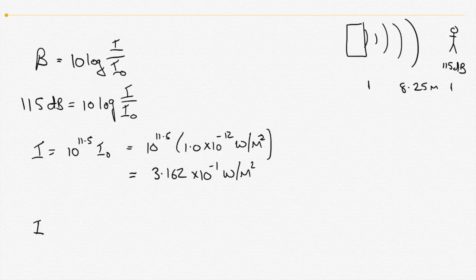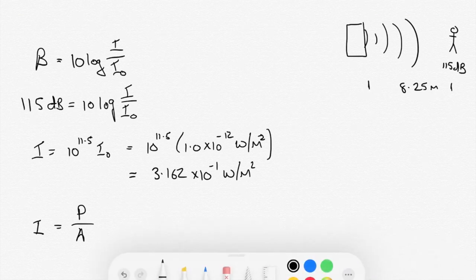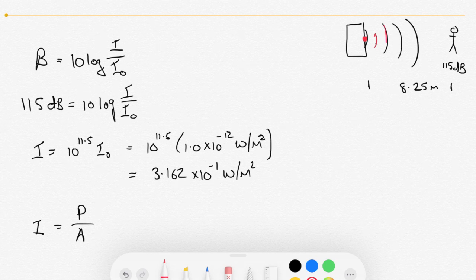So intensity, we said, is power per unit area. So power per unit area. Well, what area are we talking about here? So what we're talking about is, let's change the color quickly. Well, red will do. So the sound radiates from this point, and as we know, it radiates outwards. And it basically draws a circle out in space. So we could take this as the arc of a circle here.